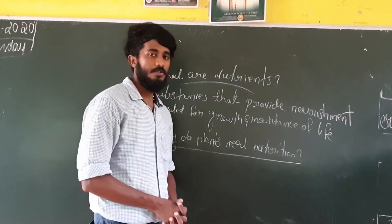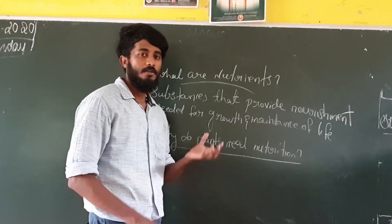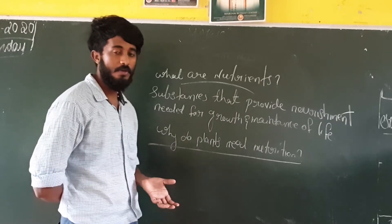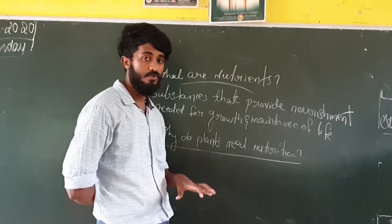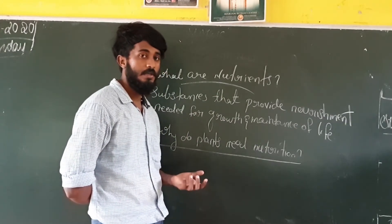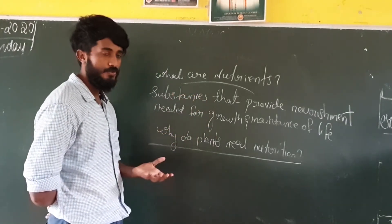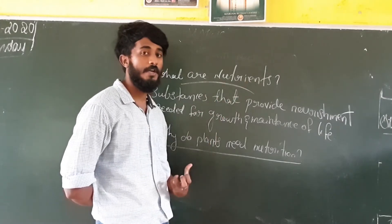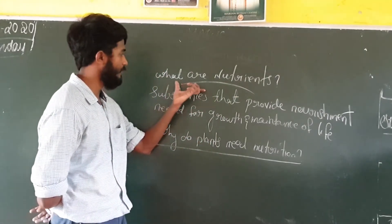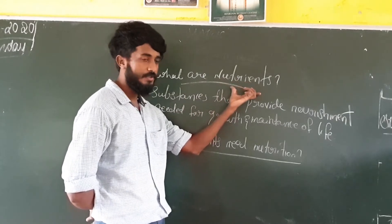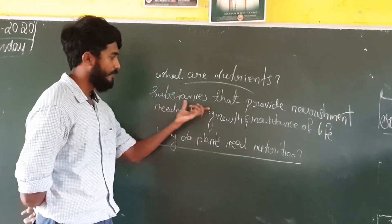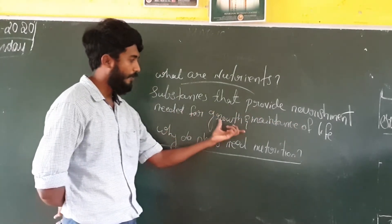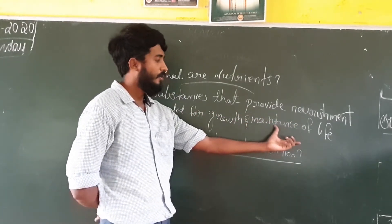Students, we studied that through nutrition, plants get nutrients. Several nutrients are mixed into plants for their growth. So my question is, what are nutrients? We should study a definition for nutrients. Nutrients are the substances that provide nourishment needed for growth and maintenance of life.